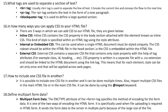Question 16: In how many ways can you apply CSS to your HTML file? There are three ways: Inline CSS contains the CSS property in the body section attached with the element, specified within an HTML tag using the style attribute. Internal or embedded CSS can be used when a single HTML document must be styled uniquely — the CSS ruleset is within the HTML file in the head section. External CSS contains a separate CSS file that contains only style properties with the help of tag attributes such as class, ID, heading, etc. The CSS property is written in a separate file with a .css extension and should be linked to the HTML document using the link tag, so each element's style is set once and applied across web pages.